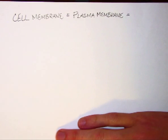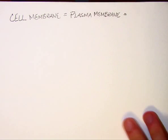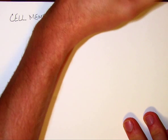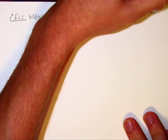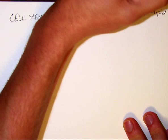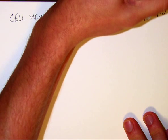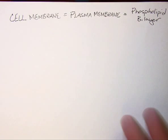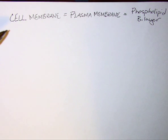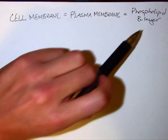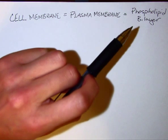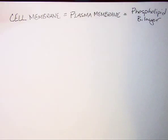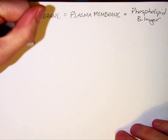There is a third name for the cell membrane, and this is the one we're going to talk about today: the phospholipid bilayer. The cell membrane is just generally what we refer to it as, but the phospholipid bilayer is really how we explain chemically how the layer is made.